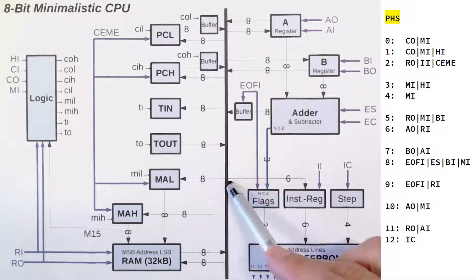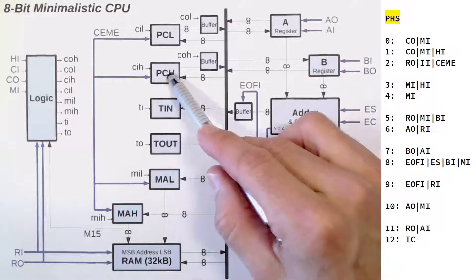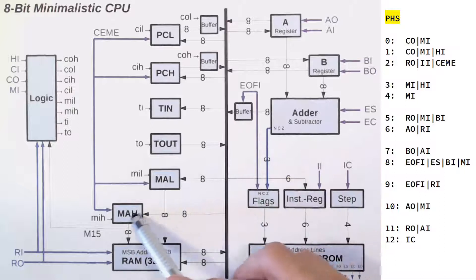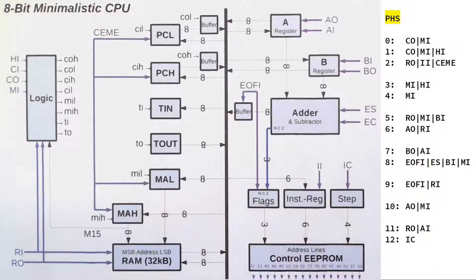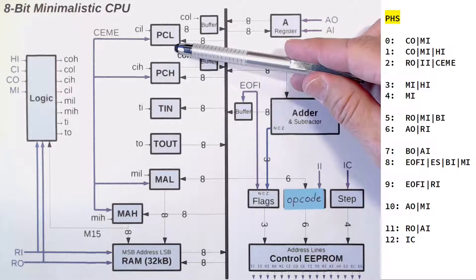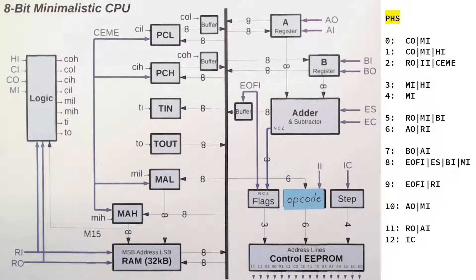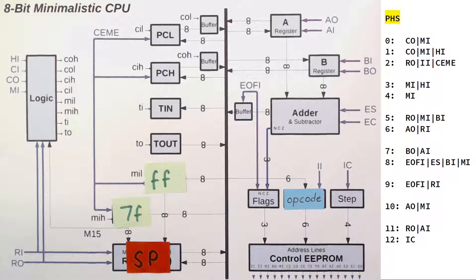So counter out memory in and counter out memory in high copies the PC address into the MAR, exposing the next opcode in RAM. RAM out instruction in moves this opcode into the instruction register and count enable increments the program counter by one. Memory in high and memory in loads 7FFF into the MAR, exposing our stack pointer in RAM.